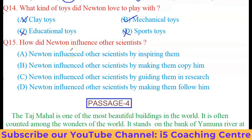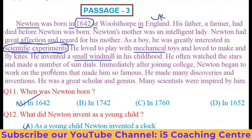Question 15: How did Newton influence other scientists? Option A — by inspiring them. Option B — by making them copy him: he never asked anyone to copy, so wrong. Option C — by guiding them in research: this can also be deleted. Option D — by making them follow him: wrong. From the passage: 'Many scientists were inspired by him.' So option A is the right one — Newton influenced other scientists by inspiring them. So passage 3 is completed.